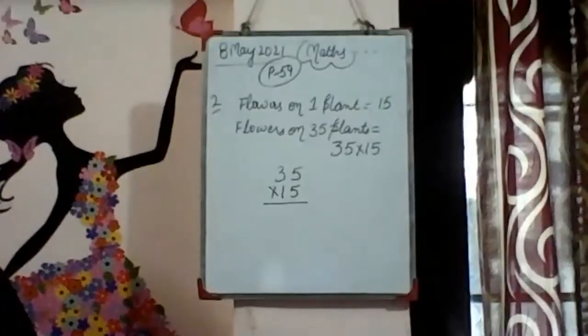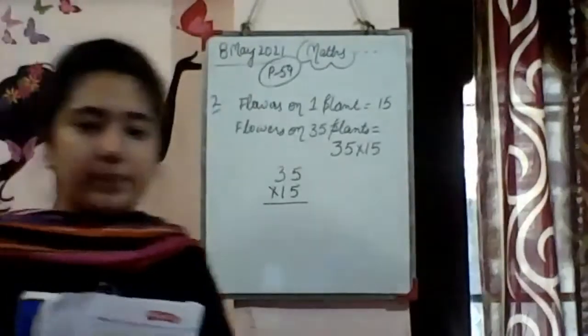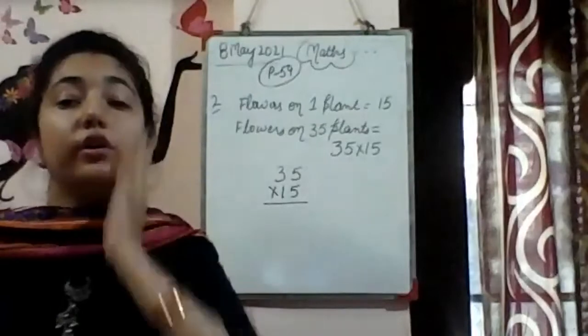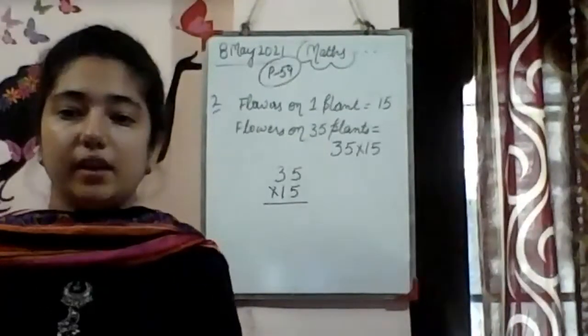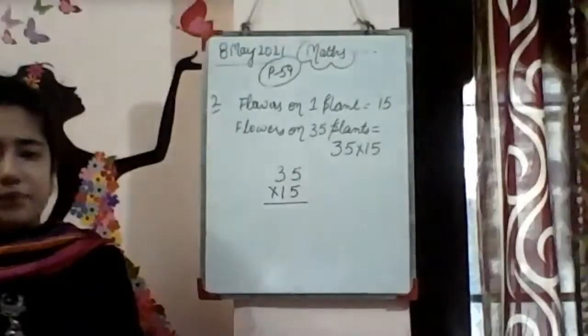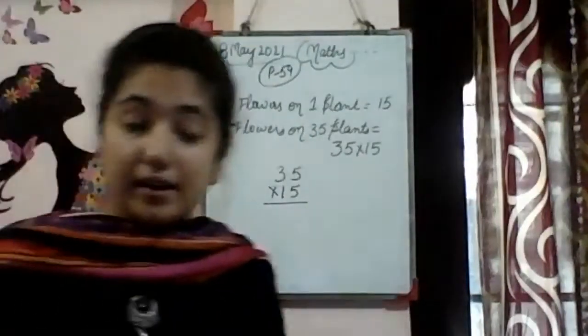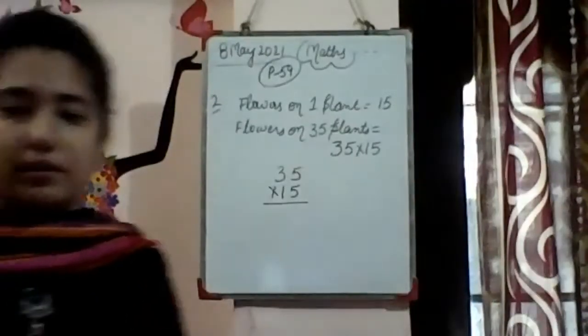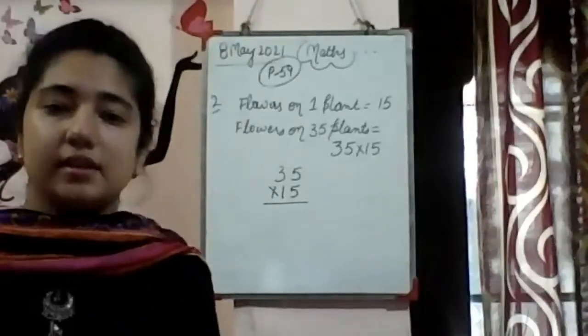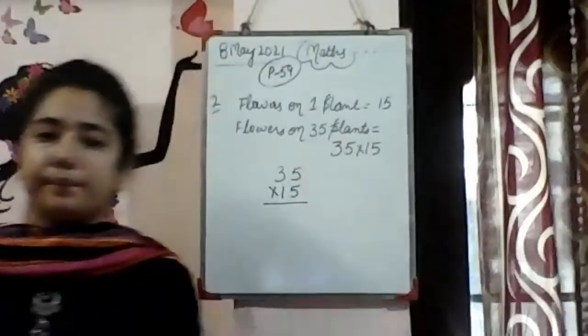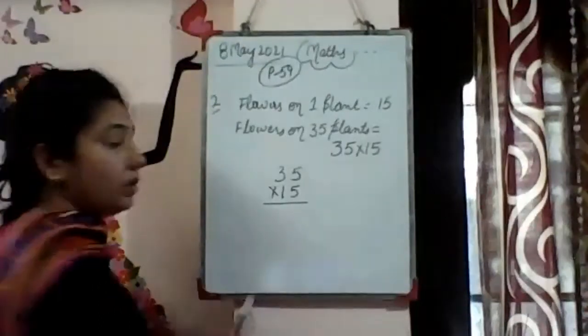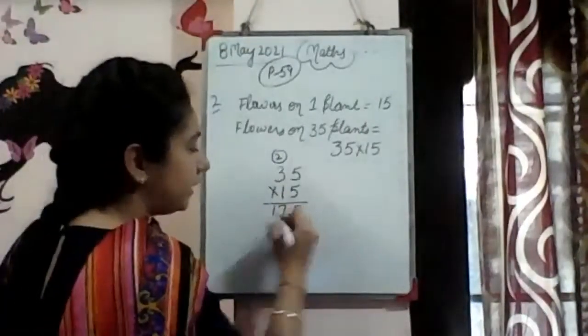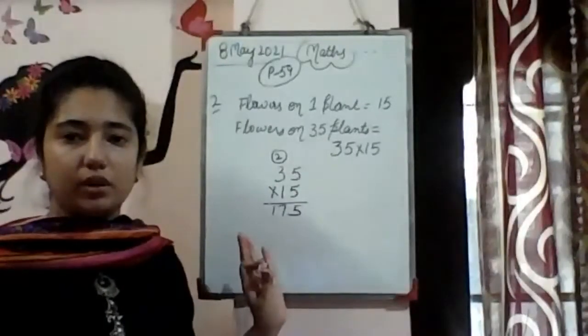Now solve this sum and let me know the answer. Complete this sum. Students are responding: Krishnam, Harsh, Shivang, Ekvir. Some are writing flowers, some are writing plants. Let's see its multiplication part. 5 times 5 is 25, 5 will be written here and 2 is carried over. 5 times 3 is 15, 15 plus 2 is 17.